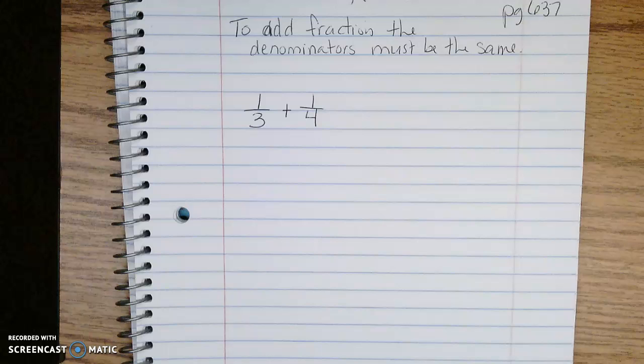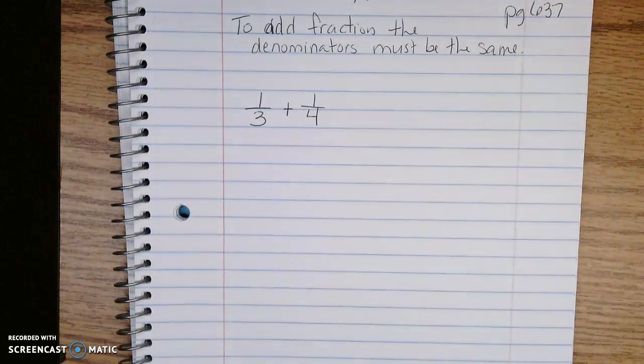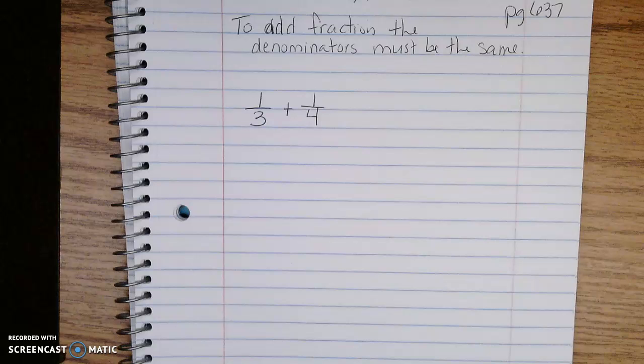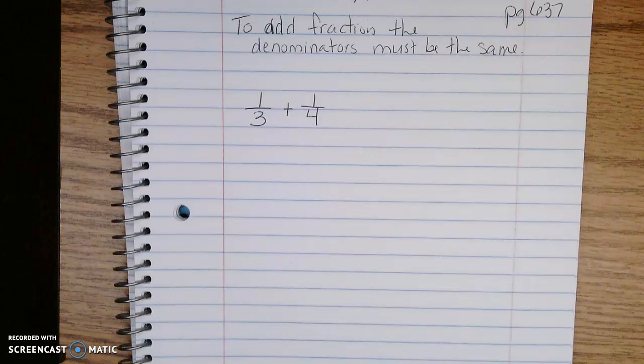We're going to add one-third of an hour plus one-fourth of an hour. Three and four are not like denominators, so I need to make them like denominators.